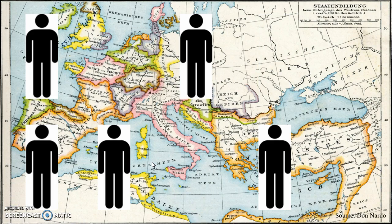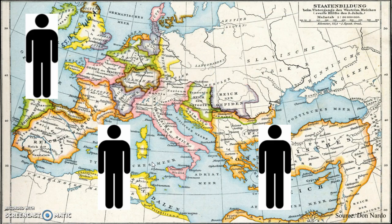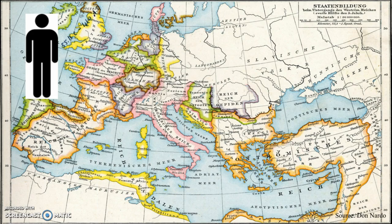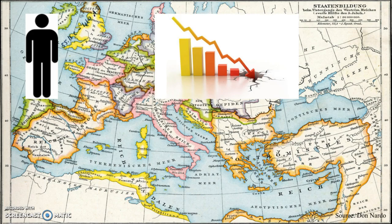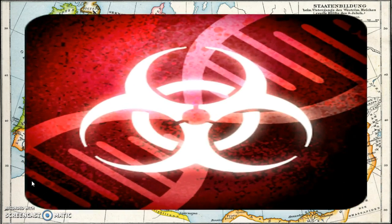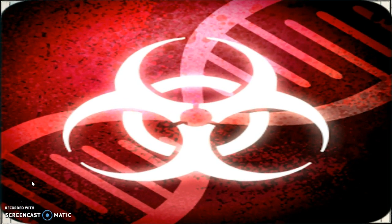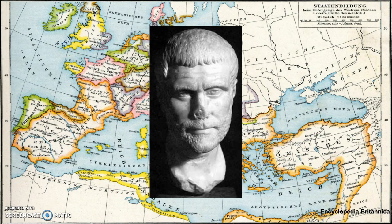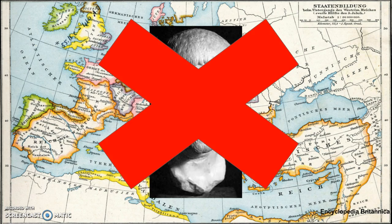A number of factors contributed to the depopulation of the Western Roman Empire. As the number of people decreased, the empire faced many economic and military problems. Around 250 AD, the Plague of Cyprian raged across the Roman Empire, killing millions of people. It was said that around 5,000 people died each day from the sickness, even killing the emperor Claudius Gothicus. This plague was a huge blow to the population and had a significant impact on the lasting Roman Empire.